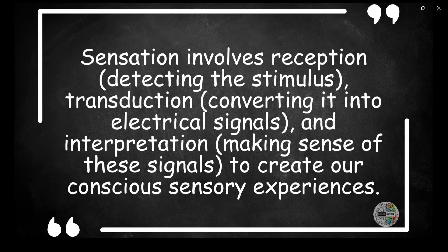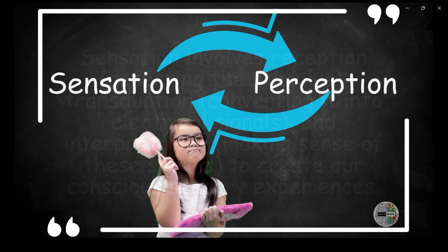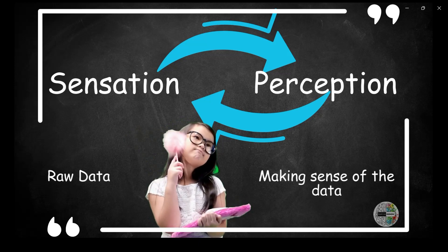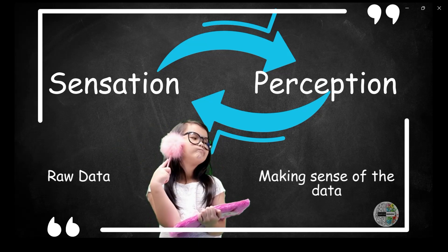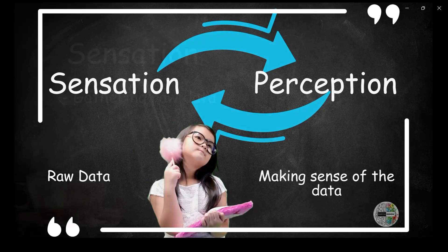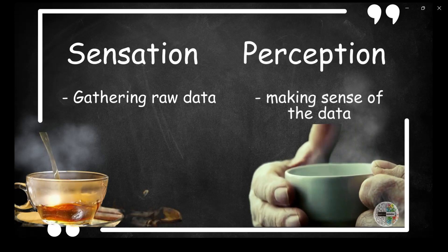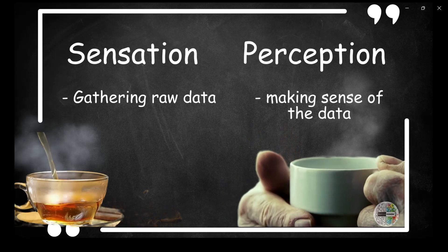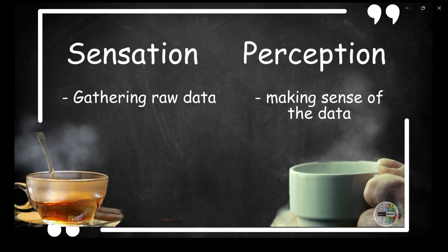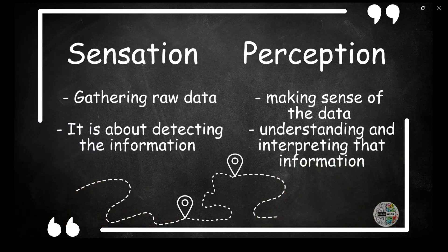So in a gist, sensation involves reception, transduction and interpretation to create our conscious sensory experiences. But what is the connection with perception? So if sensation is gathering raw data, then perception is like making sense of the data. For example, when you touch a hot cup of coffee, your skin's sensory receptors detect the heat. This is sensation. When your brain processes the heat sensation from the coffee cup, you perceive it as hot, understanding that it might burn you if you touch it for too long. That is perception. Sensation is about detecting the information while perception is about understanding and interpreting that information. And together, they help us navigate and interact with our surroundings.